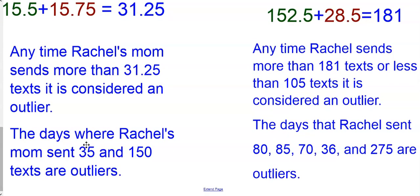We go back to our data. We can see that at different times, Rachel's mom sent out 35 texts and 150 texts. So those data values, however often they appear, are considered outliers.